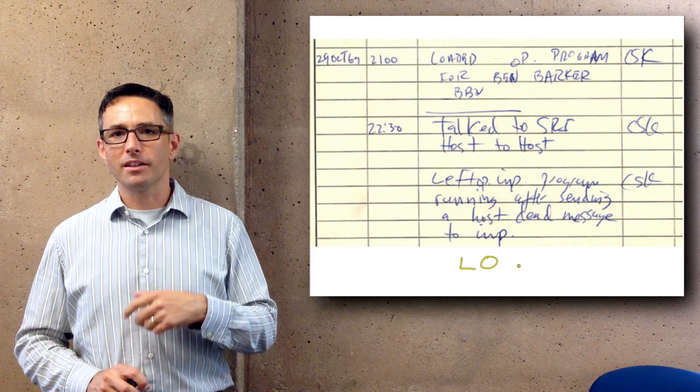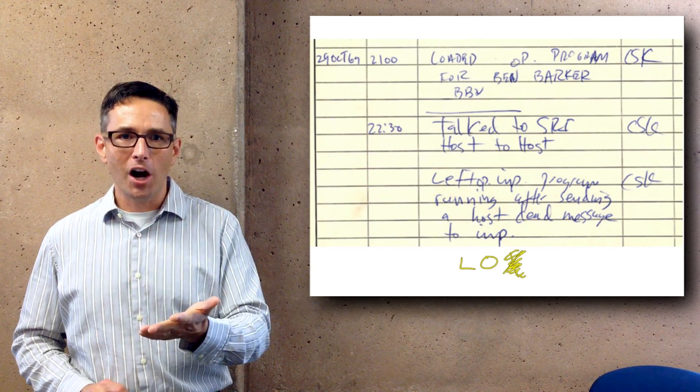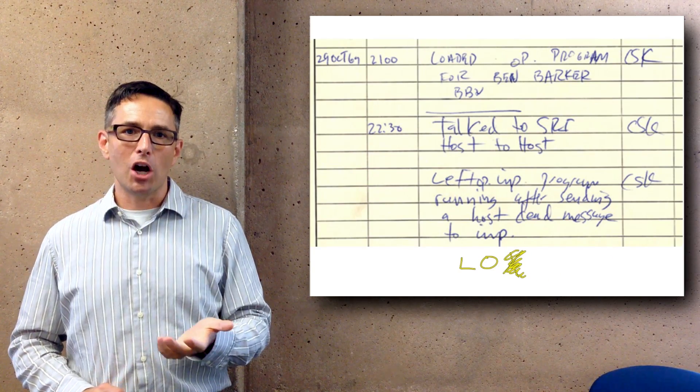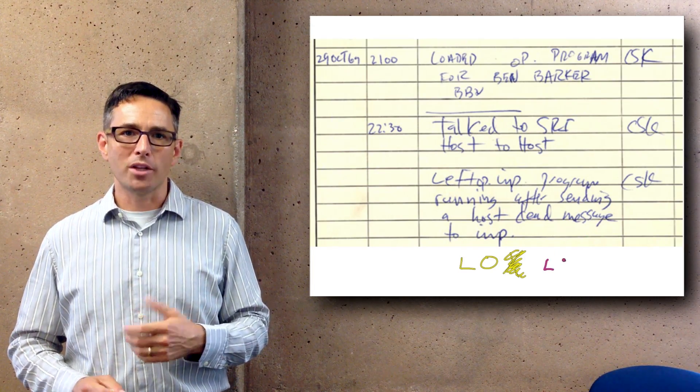The attempt of that communication, as shown here in the log—this is a paper log that researchers were keeping to document their progress—the attempt was to log into that computer. The letters they sent were L-O for login, then G, and immediately after they sent the G the computers crashed. So literally the first message sent on the internet was 'lo.'